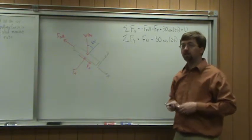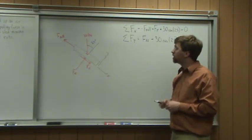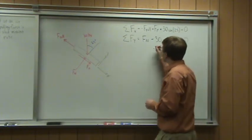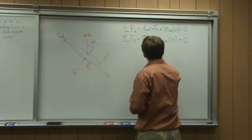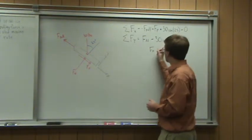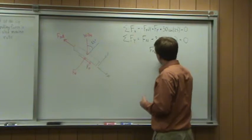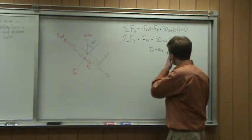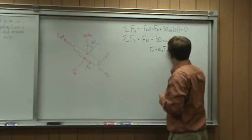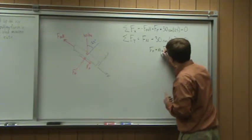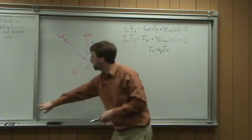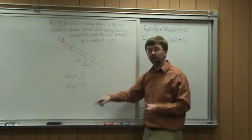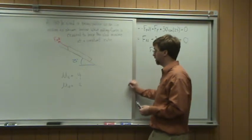I've got one more equation that's going to relate these two. I know this sled is sliding uphill, so my friction force, since sliding is occurring, is going to be equal to the kinetic coefficient of friction times the normal force. This kinetic coefficient of friction was given to me in the problem, 0.3.